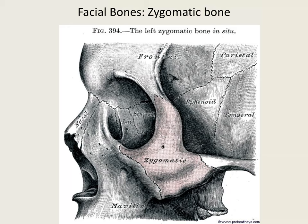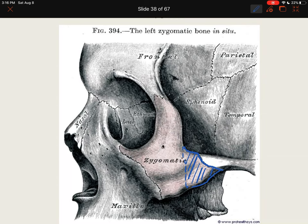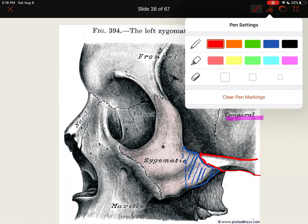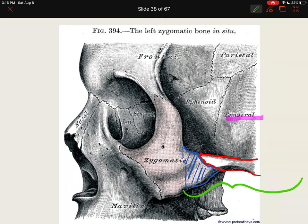Moving on to the zygomatic bone — it forms your cheek. The only part you need to know is the temporal process. The cheekbone — the zygomatic bone — has a process that forms a suture with the temporal bone. This area is the temporal process of the zygomatic bone, because it reaches out to touch the temporal bone. On the other side, the temporal bone has a zygomatic process that reaches out and forms a suture line with the zygomatic bone. Together, these two processes form the zygomatic arch.